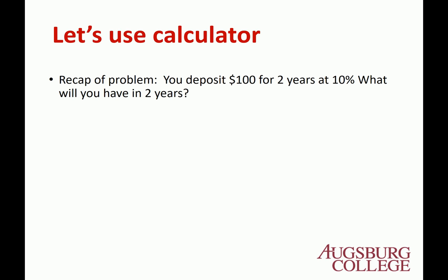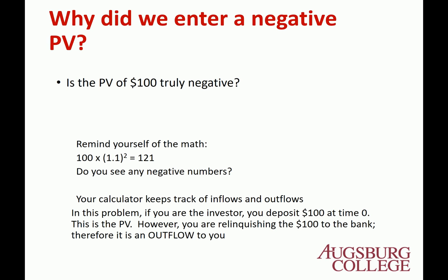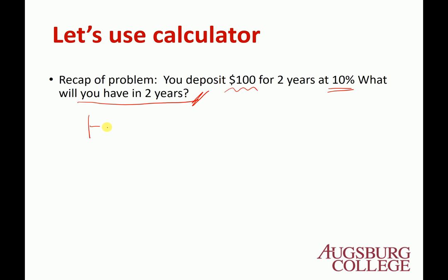Now let's use the calculator. You deposit $100 for 2 years at 10% interest. What will you have in 2 years? We know the answer should be $121. Let's draw the timeline: 0, 1, 2. You make a deposit of $100 at time 0. When you use the calculator, you have to carefully determine the sign — positive or negative.